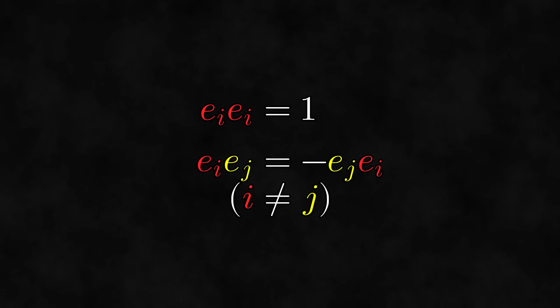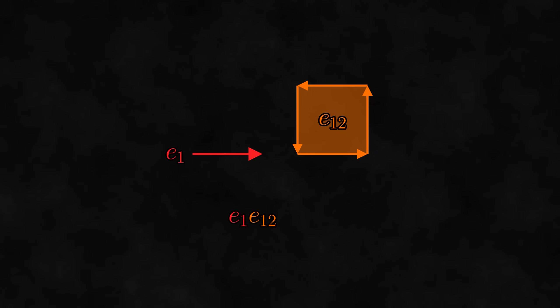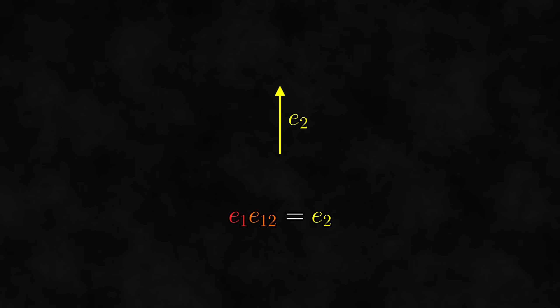We already know how to perform all of these multiplications algebraically, so we can use the algebraic answer to see what the answer is. Once we see the answer, we can start to think about how the product itself acts geometrically. Let's start with something simple like e1 times e12. Algebraically, this is equal to e2. So what happened geometrically? Notice that each factor in this product has e1 in it, so there's a common direction between the two factors. Thus, we do a contraction, but only with the e1 parts. This leaves e2, which is the final result.